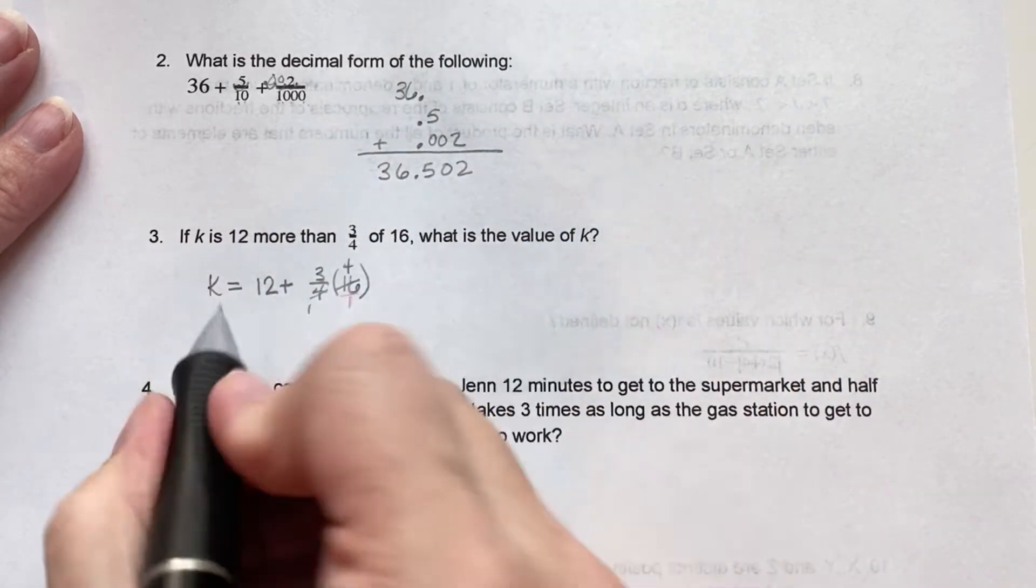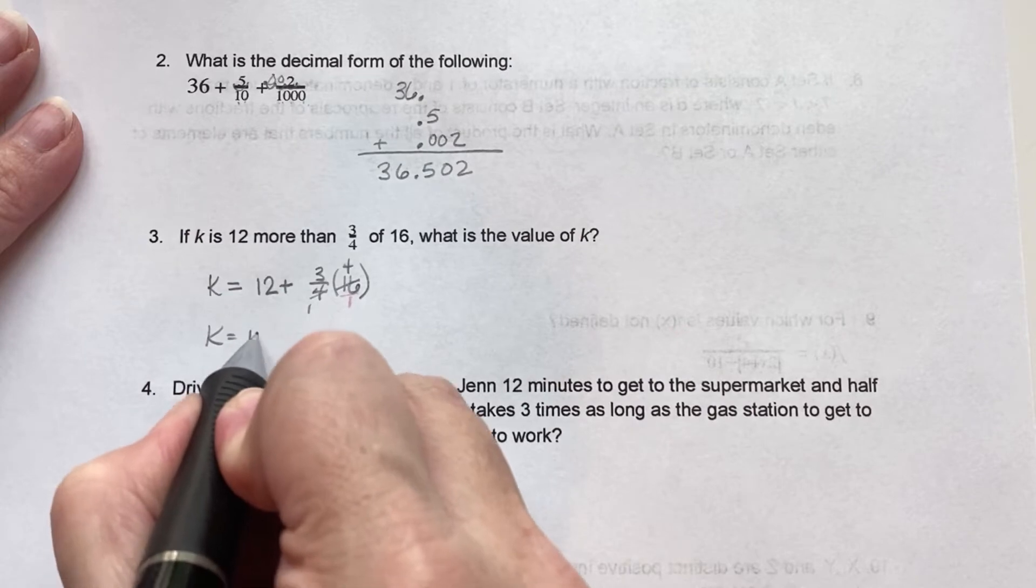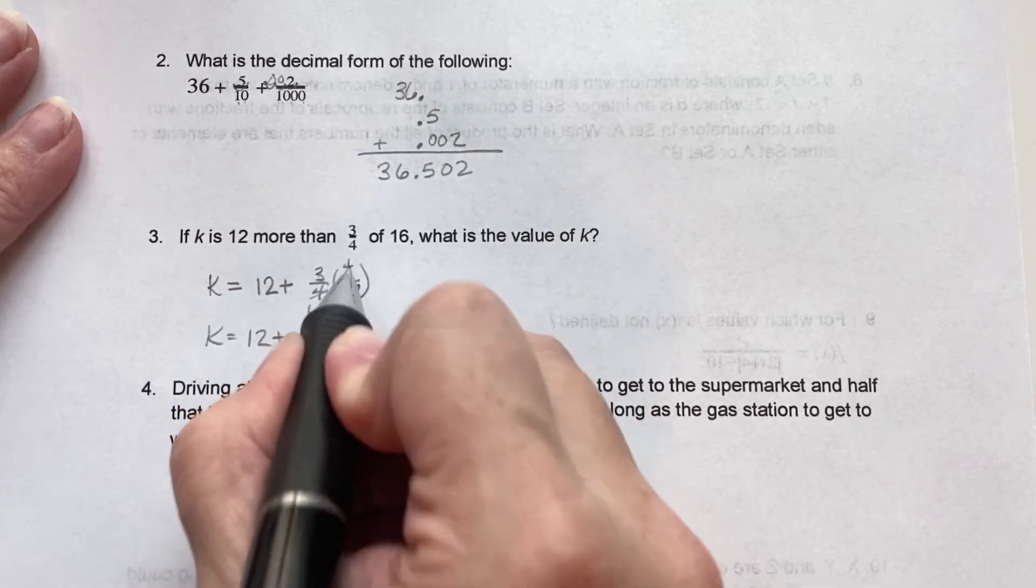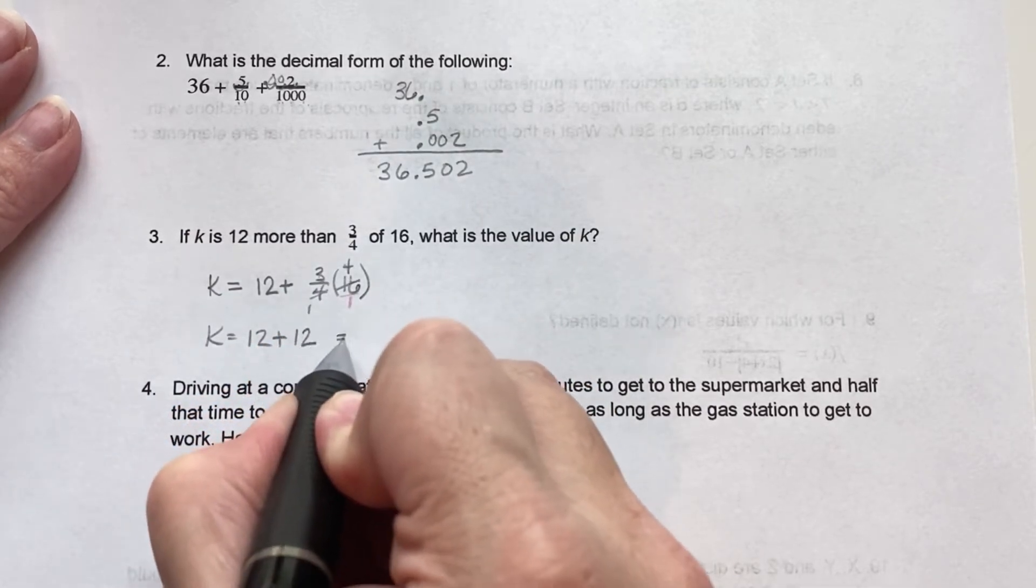So 1 and 4. So k equals 12 plus 3 times 4, 12. So that equals 24.